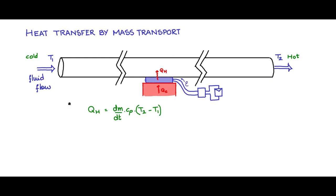This is the heat flow relationship for mass transport where dm by dt is called the mass flow rate. Cp is called the specific heat of the fluid.